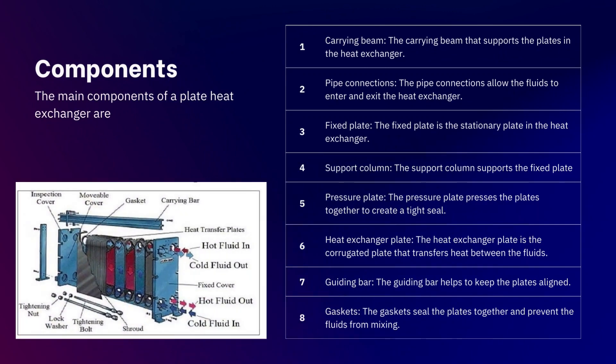The main components of a plate heat exchanger are: first, the carrying beam, which supports the plates. Second, pipe connections, which allow fluid to enter and exit the heat exchanger. There is a fixed plate, which is a stationary plate supported by a support column. The pressure plate presses the plates together to create a tight seal and prevent leakage or fluid mixing. The heat exchanger plate is the corrugated plate that transfers heat between fluids. A guiding bar keeps the plates aligned, and gaskets seal the plates together to prevent fluid mixing.